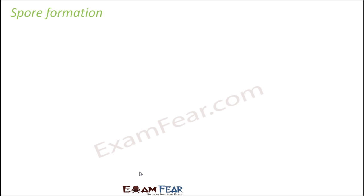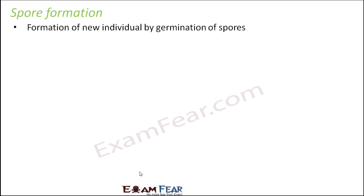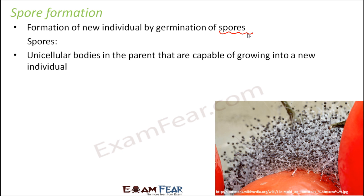Now we will talk about another important method of asexual reproduction — that is spore formation. It is a very common process by which many organisms reproduce. New individuals are formed by germination of spores. So what are spores? These are unicellular bodies in the parent that are capable of growing into a new individual — small structures which are produced by the parent body and can give rise to a new individual.